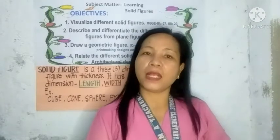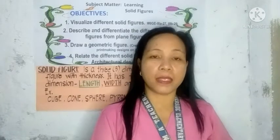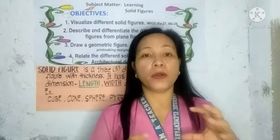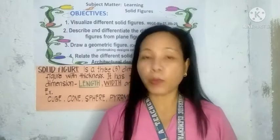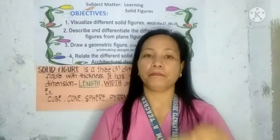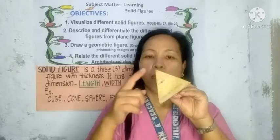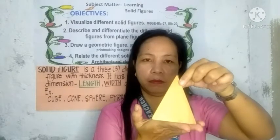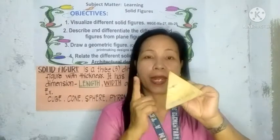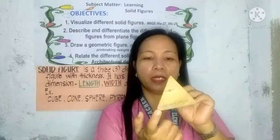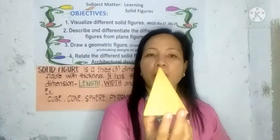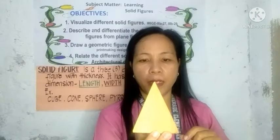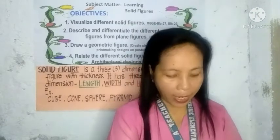Next example: the pyramid. A pyramid can be named according to its base. What is the shape of the base of this pyramid? Correct — it is a triangle. Therefore, the name of this pyramid is a triangular pyramid.